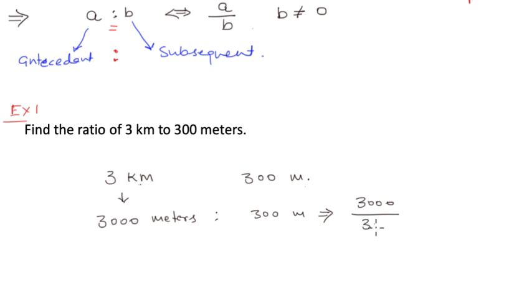Now of course we can say that this can be rewritten as a over b where a is three thousand and b is three hundred. Simply, three hundred is dividing three thousand and it becomes ten. So I will say my ratio of three kilometers to three hundred meters is 10 is to 1.